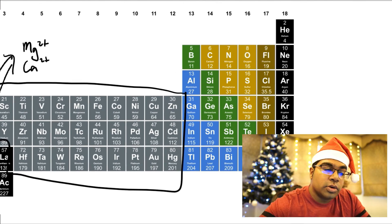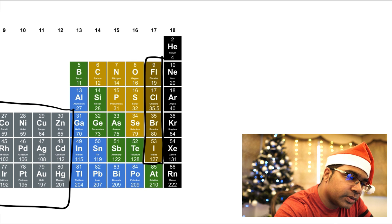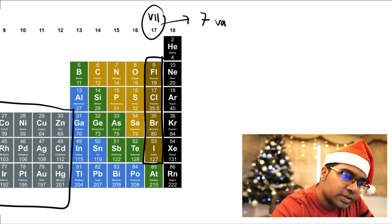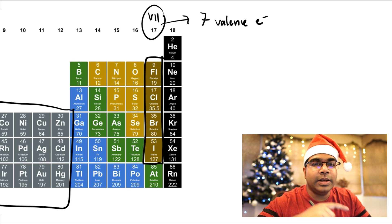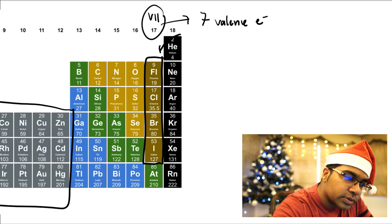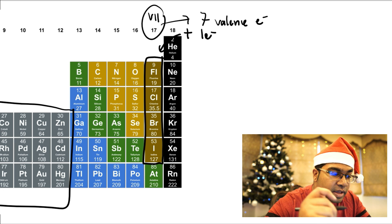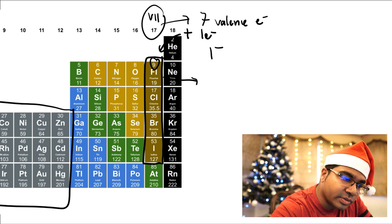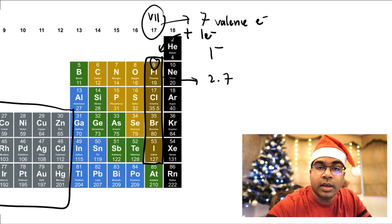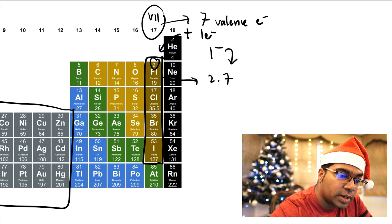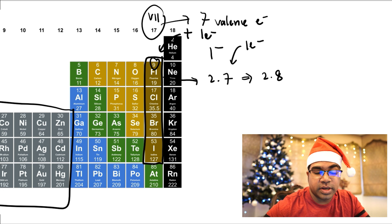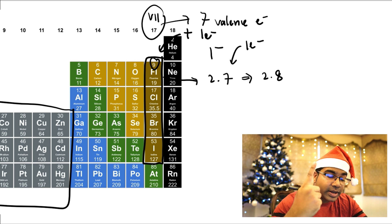And then we go on to group 17, also known as group VII. In this group, we have 7 valence electrons. When we have 7 valence electrons, these elements will need to gain one more in order to form a stable electron arrangement. Therefore, one electron is going to be added, and their charges will be 1 minus. For example, fluorine has 9 electrons — an electron arrangement of 2, 7. So fluorine is going to accept one electron to achieve a stable octet arrangement, and the charge is 1 minus.